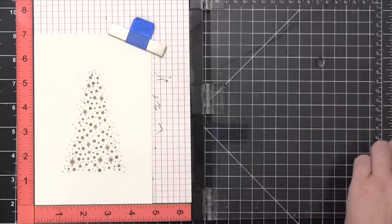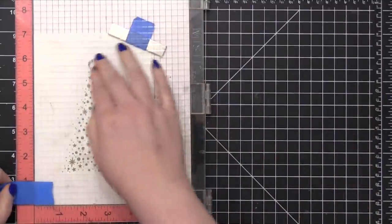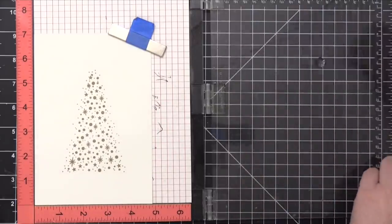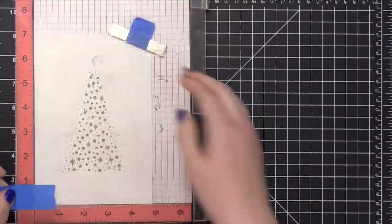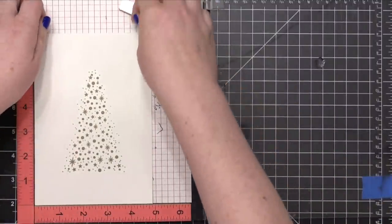I'm stamping this star twice just like I did for the rest of the tree, especially since this star is a little bit bigger and more solid. I really wanted to make sure I had a nice complete stamping of that shape.